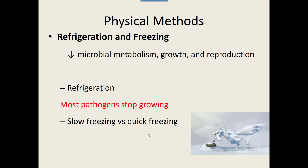If we want to freeze microbes to stop their growth, there is a difference between slow freezing and quick freezing. Slow freezing is more effective at killing microbes than quick freezing. When we slow freeze, the water in the microbes has time to form ice crystals. Ice crystals are jagged and will literally damage the cell walls to kill the organisms. Quick freezing doesn't form those ice crystals — it stops growth but doesn't always kill the organisms.